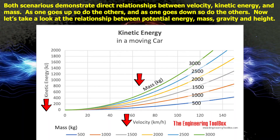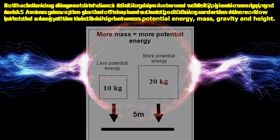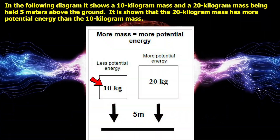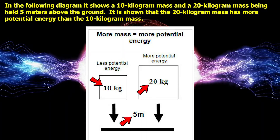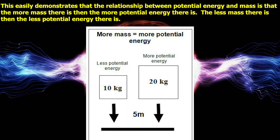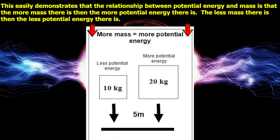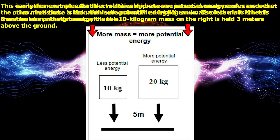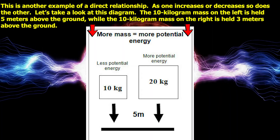Now let's take a look at the relationship between potential energy, mass, gravity, and height. The following diagram shows a 10 kilogram mass and a 20 kilogram mass held 5 meters above the ground. The 20 kilogram mass has more potential energy than the 10 kilogram mass. This demonstrates that the relationship between potential energy and mass is direct: the more mass there is, the more potential energy there is, and the less mass there is, the less potential energy there is.